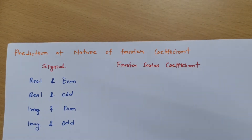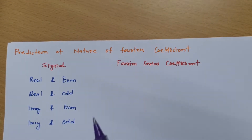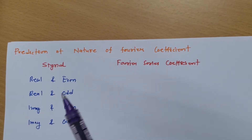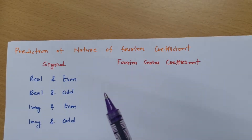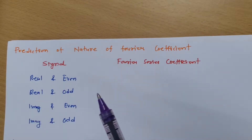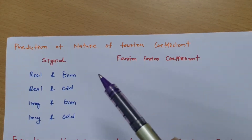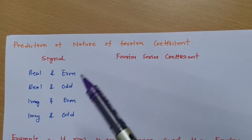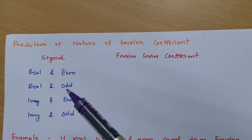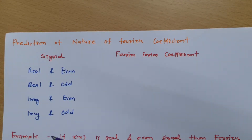Welcome to the Signal and System lecture series. In this session, I will explain prediction of the nature of Fourier coefficients. We have already seen Fourier coefficients, and now we'll see how to predict their nature so that we can solve some examples in a very easy way.